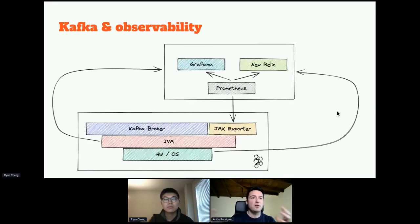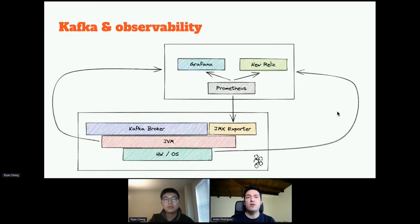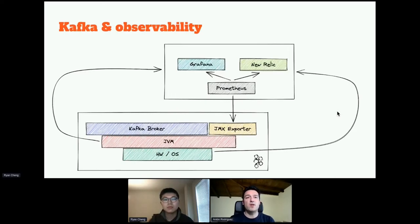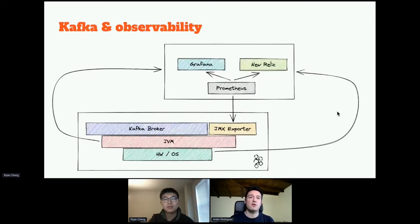We need to operate different pieces and know exactly what metrics we need and how to interpret them to operate Kafka. If there are new metrics, we have to add them and make changes — that's a lot of work. And even doing all of that is not enough.